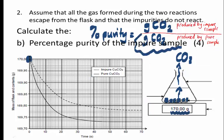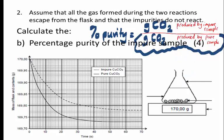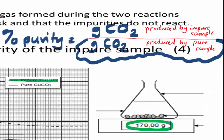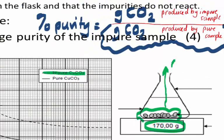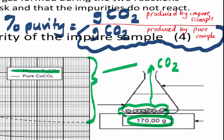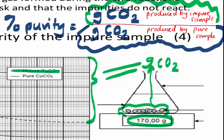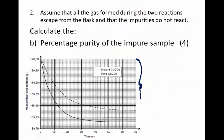The difference in mass of the flask from start to end tells us the mass of carbon dioxide produced by the pure sample. When we use the impure copper carbonate — although it's 170 grams total — not all of that mass is really copper carbonate; the rest is impurities. So not all 170 grams will react to produce carbon dioxide. The carbon dioxide produced will be less, and the change in mass of the flask will not be as great as for the pure sample.